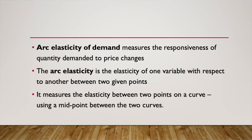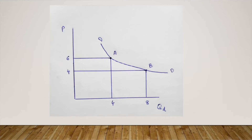As we can see in the figure, the initial level of price and quantity demanded was at point A, where price was rupees 6 and quantity demanded was 4 units. After the price falls to 4, the quantity demanded expands to 8 units, so the demand curve moves from point A to point B. Here we are calculating elasticity between the two points A and B, and since the elasticity is measured between two points, we use arc elasticity of demand.